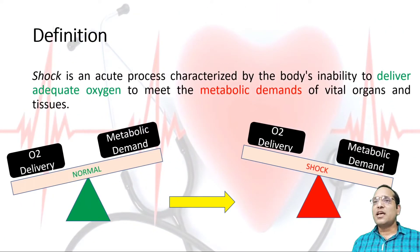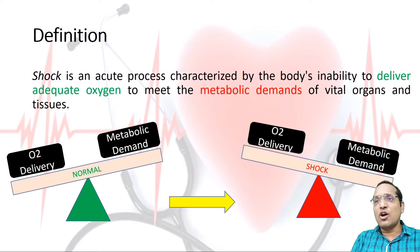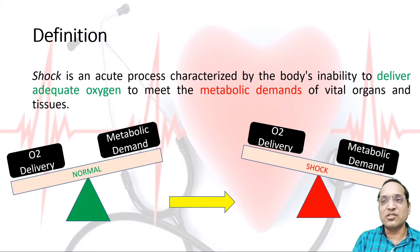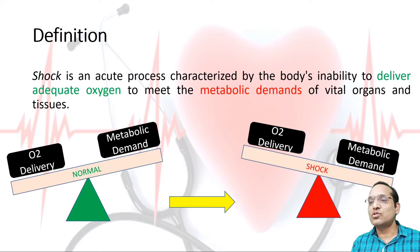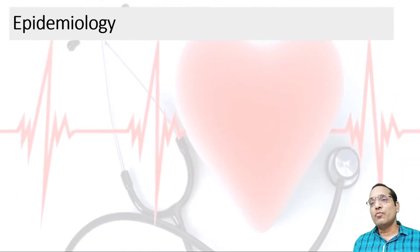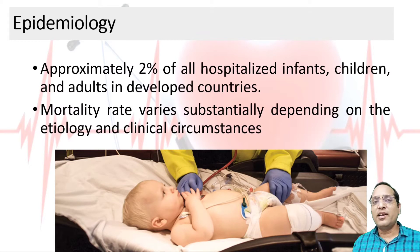Shock is an acute process which is characterized by the body's inability to deliver adequate oxygen to meet the metabolic demand. If adequate oxygen is not supplied according to the metabolic demand, organs and tissues have less oxygen supply, leading to inadequate perfusion to the vital organs — that is called shock. Epidemiologically, approximately 2% of all hospitalized children have shock, and mortality rates vary depending on the etiology and clinical circumstances.